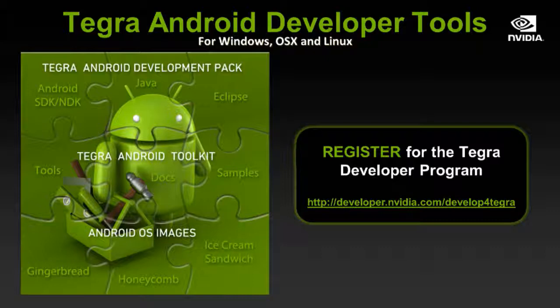Online on what we call our DevZone at developer.nvidia.com, you can register for the Tegra developer program. You'll get email notifications of updates to any component listed here, which really simplifies the process of developing for Android — native Android specifically, meaning C and C++ development.